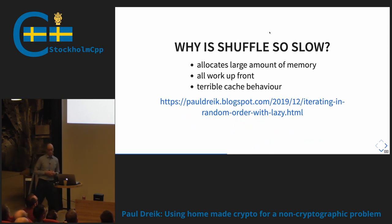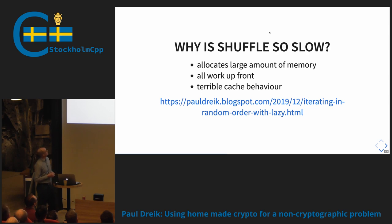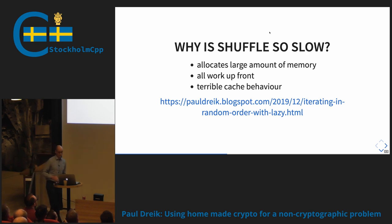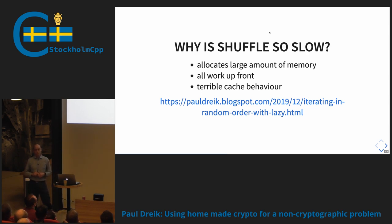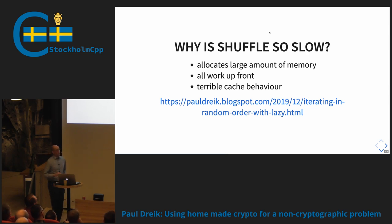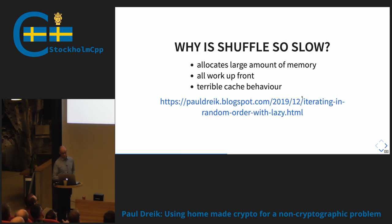Why is shuffle so slow? The first thing that happens is we allocate a huge amount of memory — for 32-bit input, we need 16 gigabytes of RAM. Then we fill it with the sequence and shuffle it. All this work is done upfront before we invoke our function under test for the first time. It also has terrible cache behavior because it will jump around in memory randomly, causing a guaranteed cache miss every cycle during shuffling. I worked a bit on a lazy Fisher-Yates implementation, which was really interesting, but I won't talk about it more today.